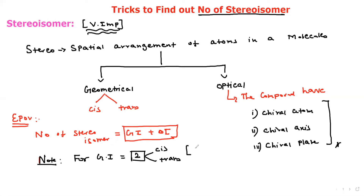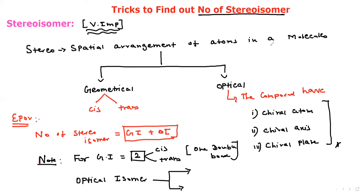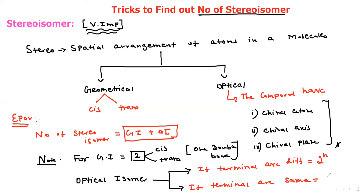For optical isomerism, there are two conditions. First condition: if the terminals are different, we use the formula 2^n. Second condition: if the terminals are the same, we use the formula 2^(n-1).